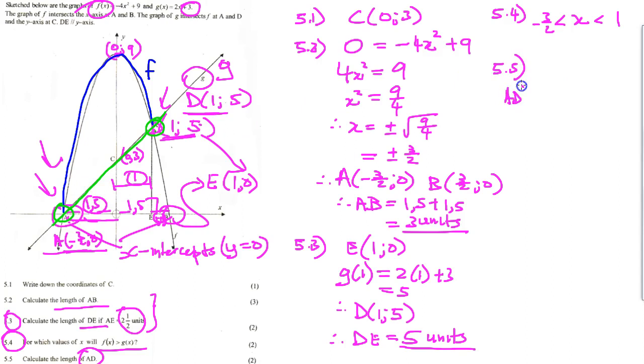So we can say that AD squared is equal to this distance, which we already know is 1.5 plus 1.5, so it'll be 3 squared, plus this distance over here which is 5 units. So that's 3 units and 5 units. So it'll be 3 squared plus 5 squared, theorem of Pythagoras, equals 2... 3 squared plus 5 squared.